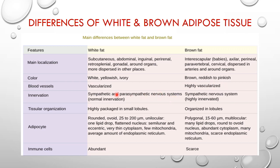Brown adipose tissue or multilocular adipose tissue is highly vascularized compared to white adipose tissue. White adipose tissue is innervated by the autonomic nervous system, whereas brown adipose tissue has sympathetic innervation.